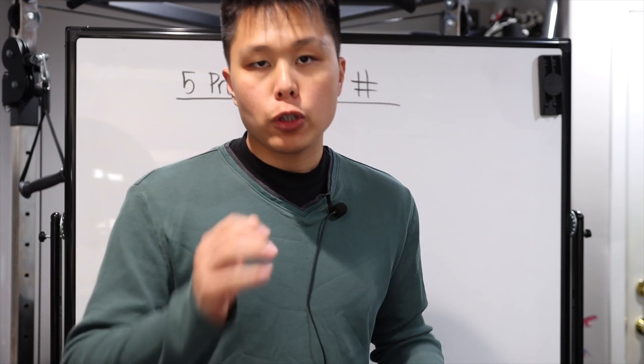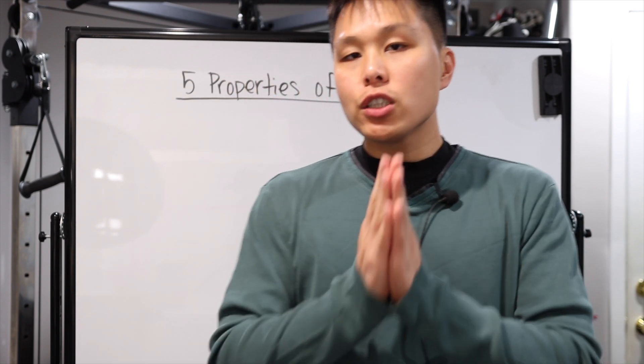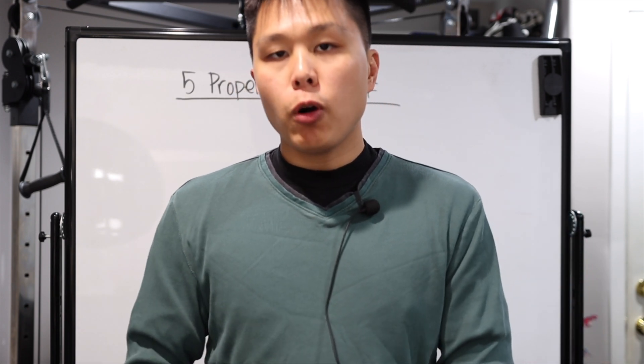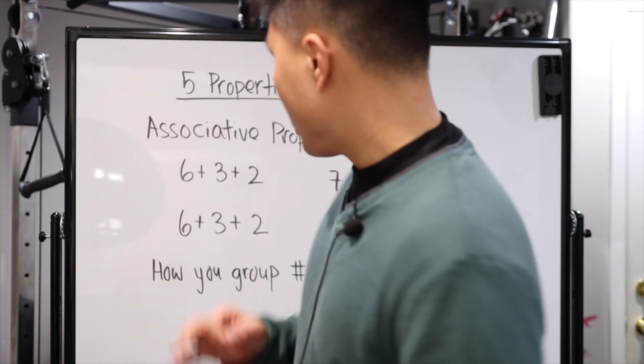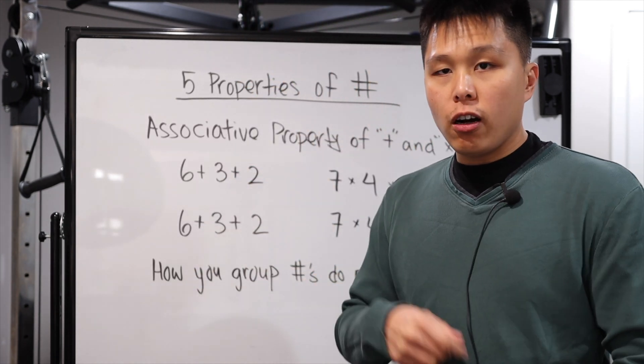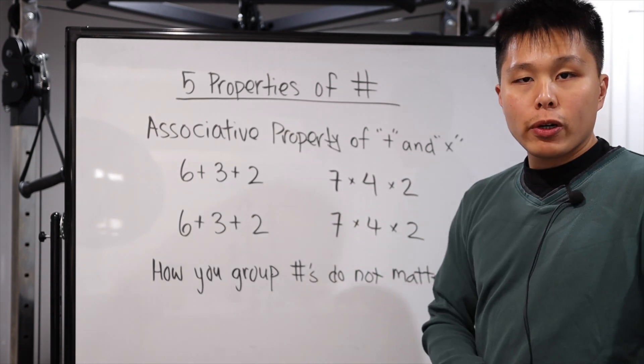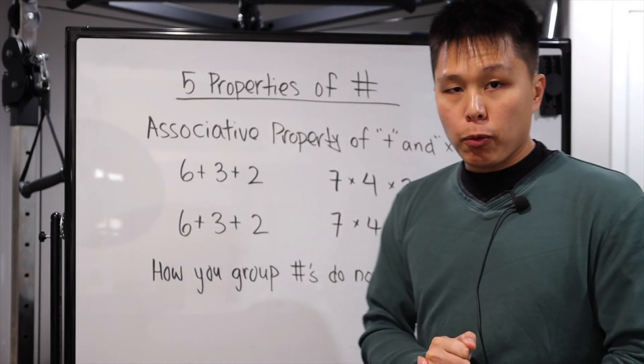Let's start off with the first one, which is going to be the associative property of both addition and subtraction. So that counts as two different properties. The first two is the associative property of both the addition operation and the multiplication operation.